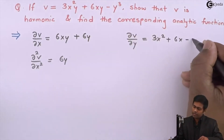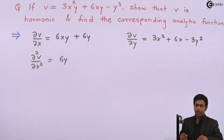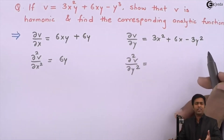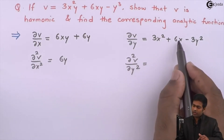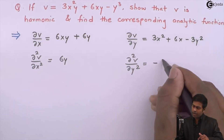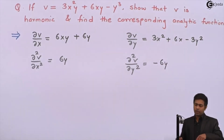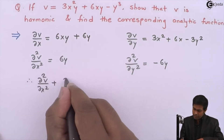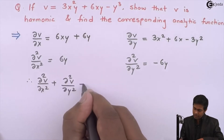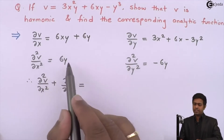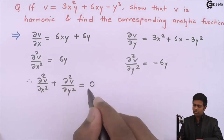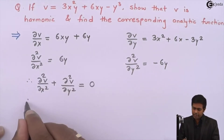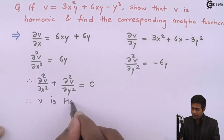Then ∂²v/∂y² = −6y. Now adding ∂²v/∂x² + ∂²v/∂y² = 6y + (−6y) = 0. Since v satisfies the Laplace equation, we can therefore say that v is a harmonic function.